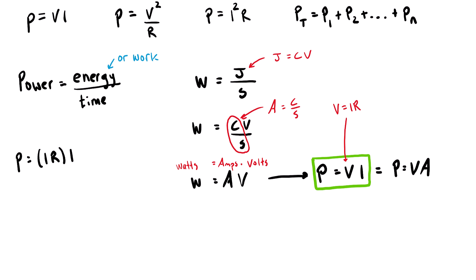And we can rewrite this as power equals I squared R. So that is exactly how you get the second formula. I guess I wrote it up here as the third, but you get the idea.